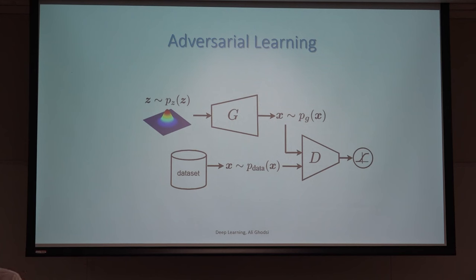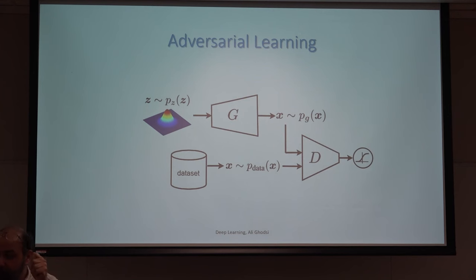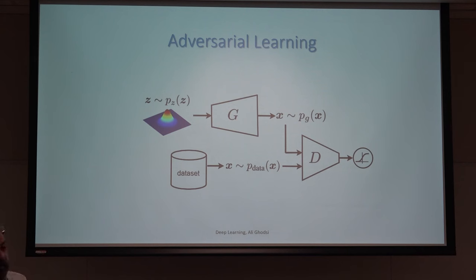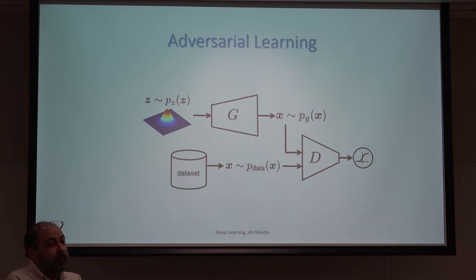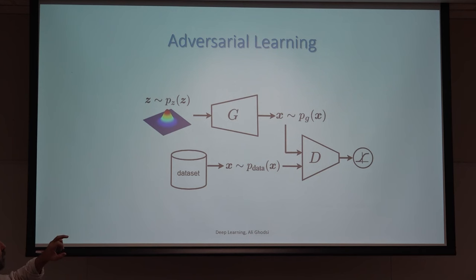The discriminator's role is to decide whether its input is fake or real. Any image from the real dataset is labeled 1 (real), and any image from the generator is labeled fake. You define an adversarial game: the generator wants to produce images indistinguishable from real ones, while the discriminator tries to catch the generator and say 'this is fake.' They compete with each other — that's the philosophy of GAN.